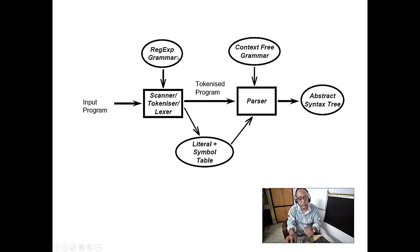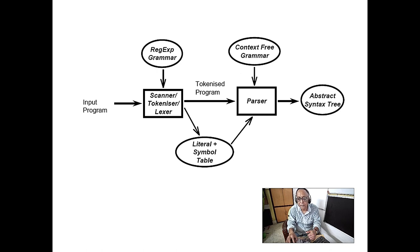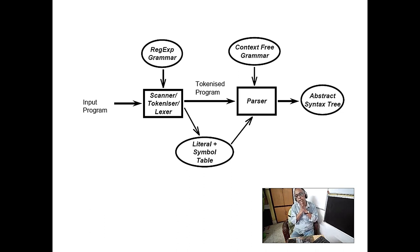A finite state machine takes an input program — lines of statements. The symbol table is basically a dictionary data structure. If you know Python, a dictionary is the best reference; it could also be an array or a table. The tokenized output goes to the parser, which always uses context-free grammar because all programming languages are based on context-free grammar.